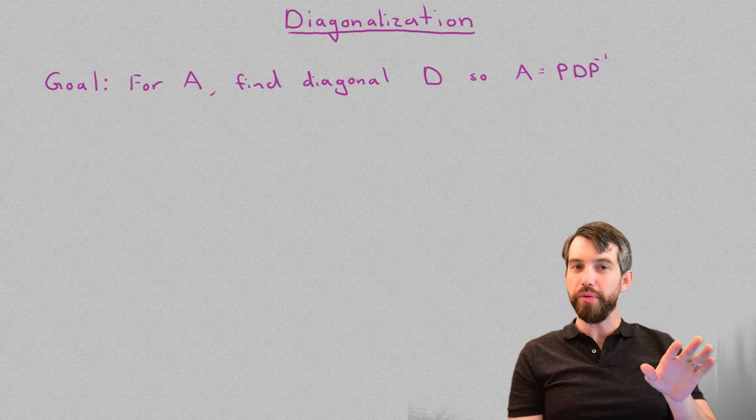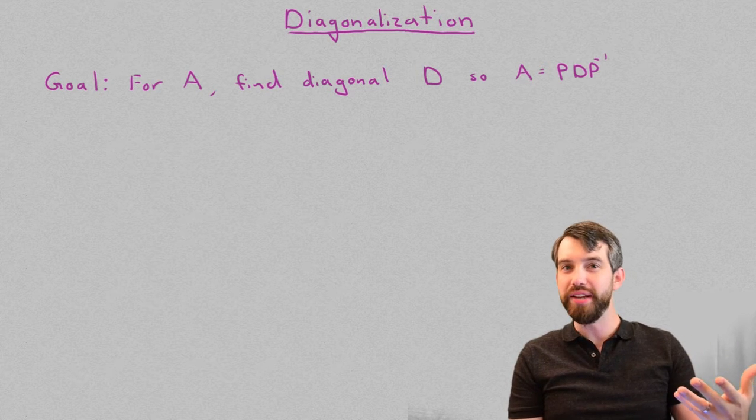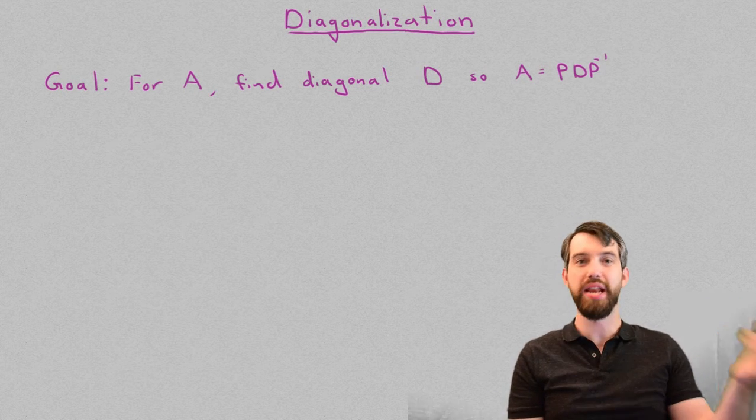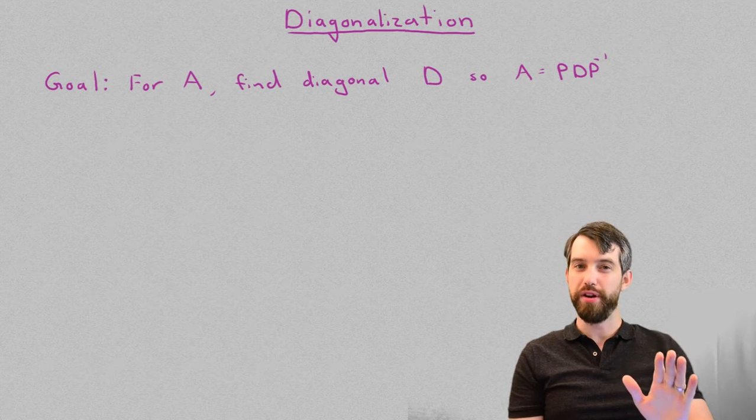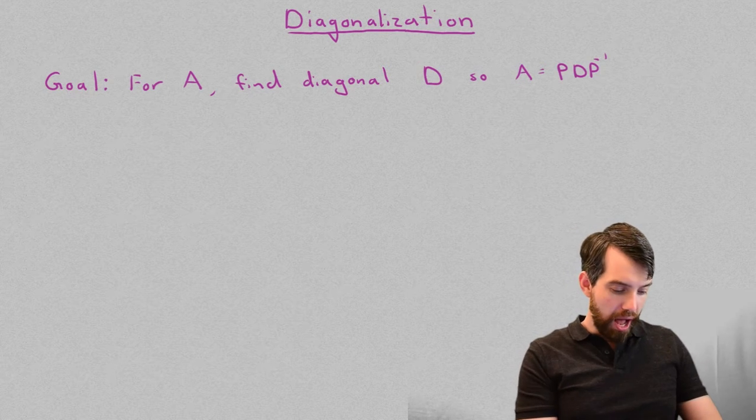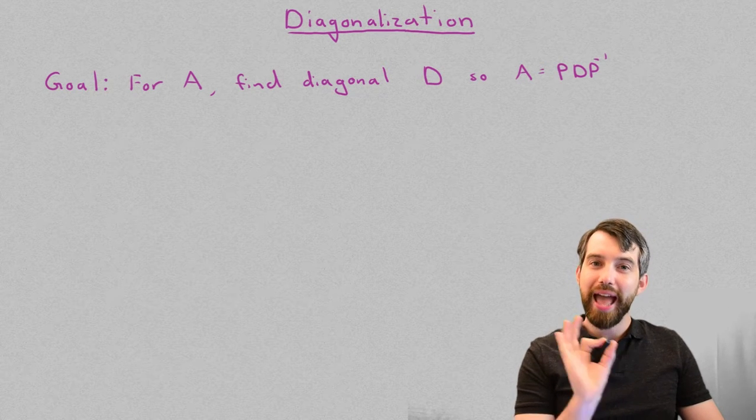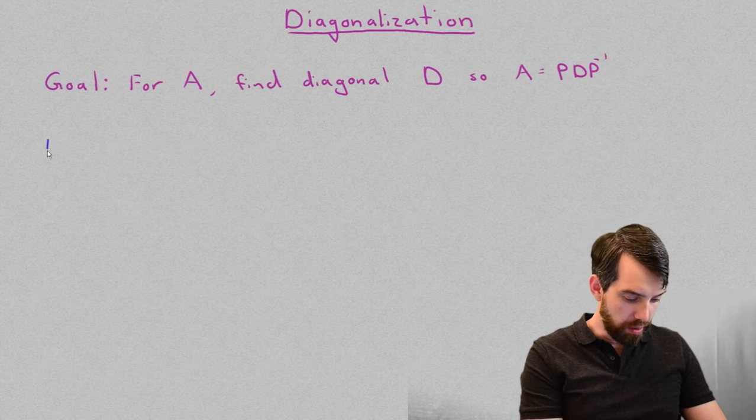Now, it turns out that you can't always do this. You can't always find a diagonal matrix that's similar to any given matrix. However, you can find it quite often, and I'll tell you exactly when. So my setup is this. Suppose that you have n different eigenvectors for an n by n matrix.